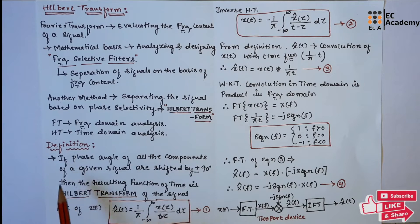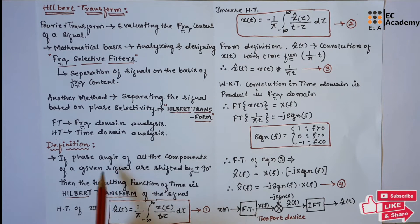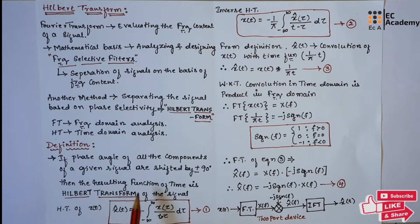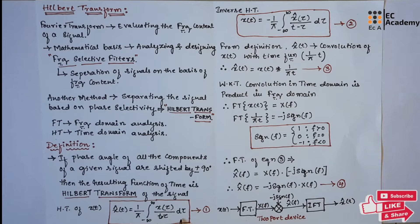Now let us see the definition of Hilbert transform. If the phase angle of all the components of a given signal are shifted by plus or minus 90 degrees, then the resulting function of time is the Hilbert transform of the signal. So, if we take a signal x(t), the Hilbert transform of x(t) can be given as x̂(t), written as 1/π times the integration from minus infinity to infinity of x(τ) divided by (t minus τ) dτ.